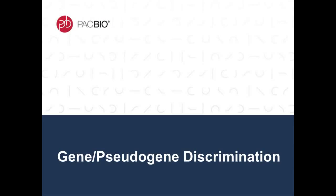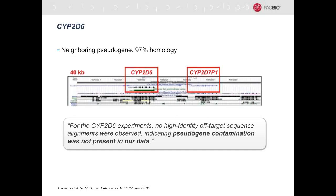Coming back to the title inspiration of my seminar — discriminating genes and pseudogenes. CYP2D6 was already an example of this because it has a neighboring pseudogene with 97% homology. Because the reads are longer, there's more flexibility in primer placement to be unique to the gene, so pseudogene contamination is less of a problem. In this study, no high-identity off-target sequence alignments were observed because all amplification products came from the gene with unique primers compared to the pseudogene.